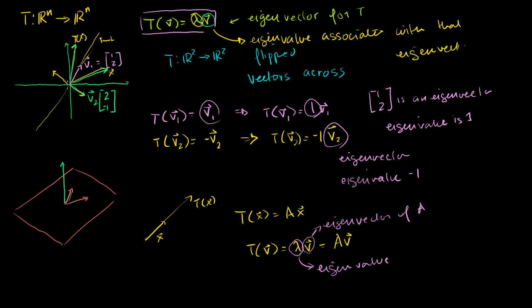But their direction or the lines they span fundamentally don't change. And the reason why they're interesting for us is that they make for interesting basis vectors. Basis vectors whose transformation matrices are maybe computationally simpler, or ones that make for better coordinate systems.